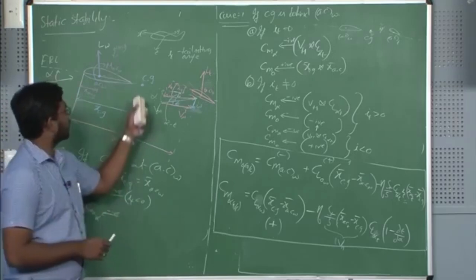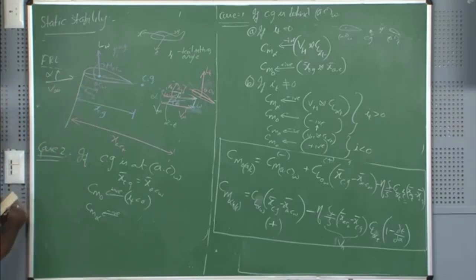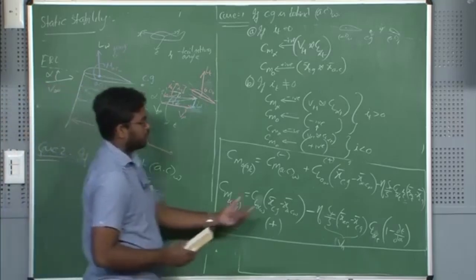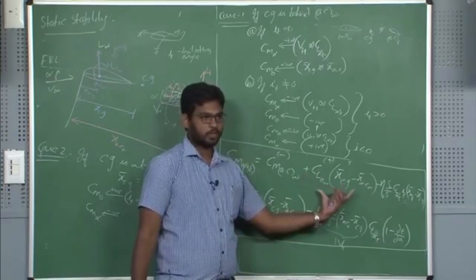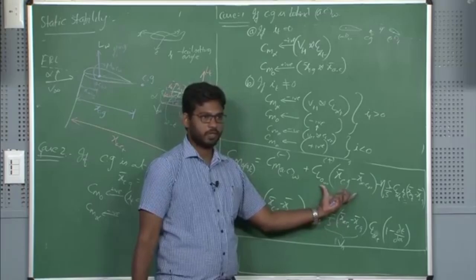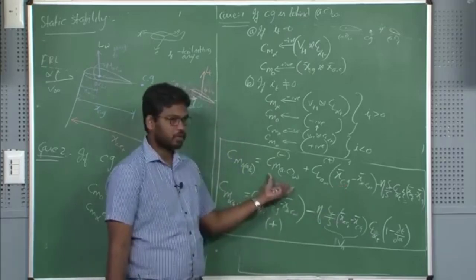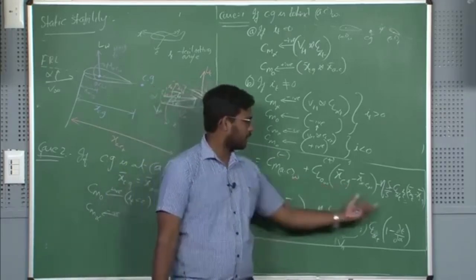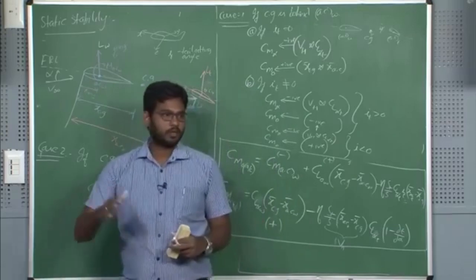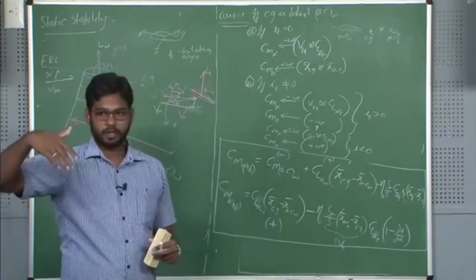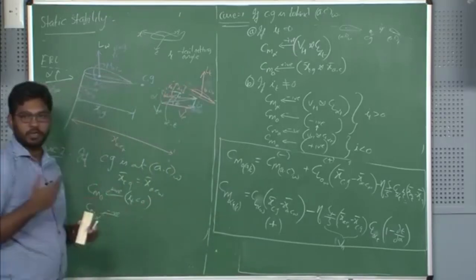Case 3: consider where the CG is ahead of the aerodynamic centre of the wing. This particular term becomes negative, so the entire contribution from CL_0 of the wing towards pitching moment becomes negative. CMAC is already negative — a higher negative term. Now you have to have a bigger i_t, a higher negative tail setting angle; the tail must be at a continuous negative angle of attack.